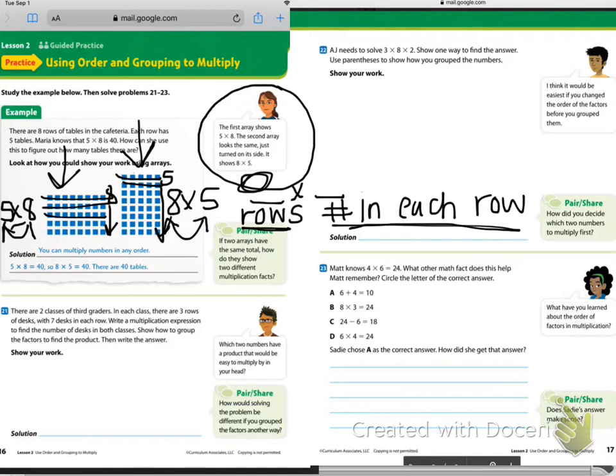Let's look at number 21. There are two classes of third graders. That's funny. I have two classes of third graders. In each class, there are three rows of desks with seven desks in each row. Write a multiplication expression to find the number of desks in both classes. Show how to group the factors to find the product. Then write the answers. I'm going to give you a clue here. This question is actually going to have three factors. We have two classes. In each class, there are three rows of seven. So we are going to have to multiply two times three times seven to find out our answer.